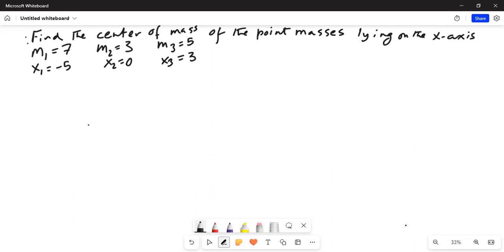Find the center of mass of the point masses lying on the x-axis. There are three masses: m1 equal to 7, m2 equal to 3, m3 equal to 5, and on the x-axis the coordinates are x1 equal to minus 5, x2 equal to 0, and x3 equal to 3.